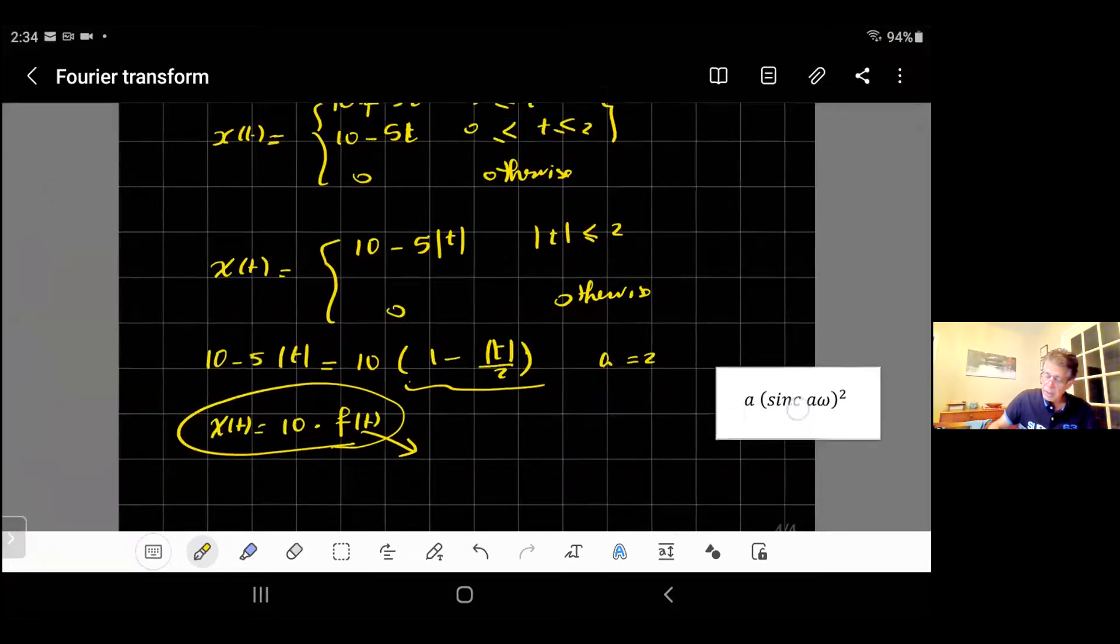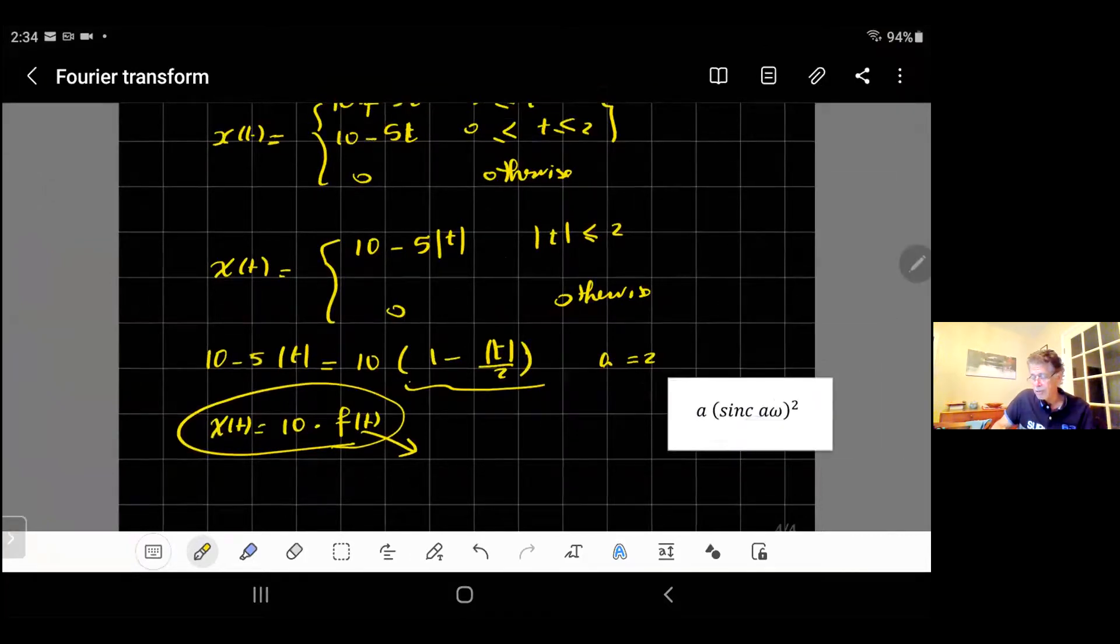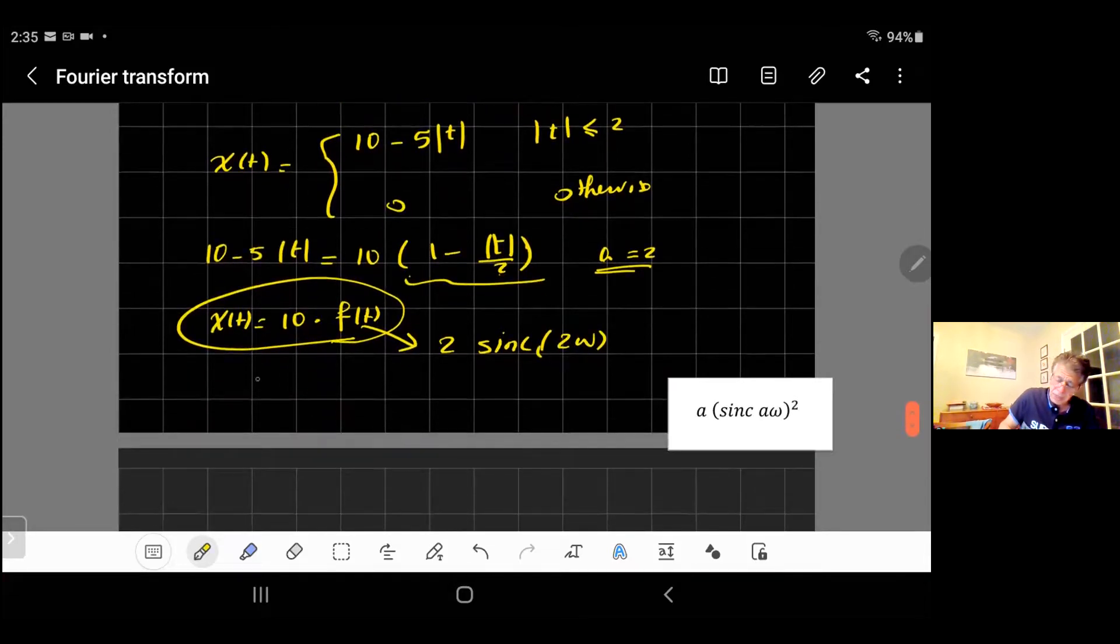This function has a Fourier transform equal to a sinc(aω). Let me just write it out. f(t) will be equal to a sinc(aω), and a is equal to 2 in my case here. That's what we found. So I will replace a by 2, and that will be 2 sinc(2ω). In the end, I multiply by 10. So I will say now my X(ω) is equal to 10 times 2, which will be 20 sinc(2ω). That's the transformation.